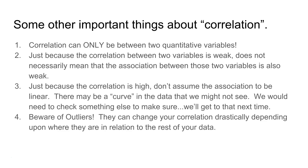Just because the correlation is high, don't assume the association is linear — there might be some curve in the data you can't see right away. We need what's called a residual plot to check for curved data, because there are cases where curved data can have very high R values, so we want to be cautious. Also, beware of outliers — they can change your correlation drastically depending on where they are, or not change it at all if they happen to fall on the line. Points with very high residual values will definitely affect your correlation.